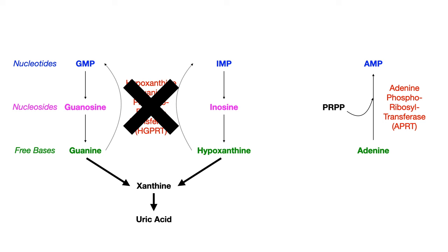As a result of an HGPRT deficiency, we are now shunted in the direction of xanthine. Guanine, instead of becoming salvaged into GMP, will get converted to xanthine. Likewise, hypoxanthine, instead of being salvaged into IMP, will be shunted and converted into xanthine. The more xanthine you produce, the more uric acid you produce, because xanthine naturally gets converted to uric acid through xanthine oxidase. So if we knock out HGPRT, not only do we move in the wrong direction and cannot do purine salvage, but we increase our levels of uric acid, and that causes clinical symptoms.